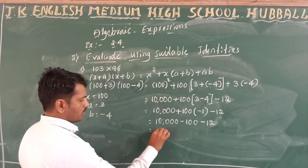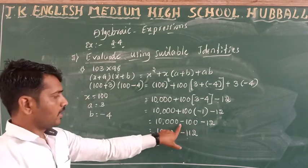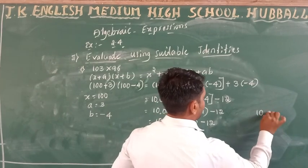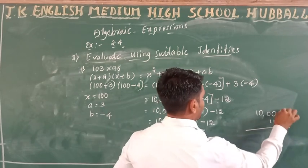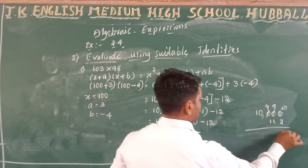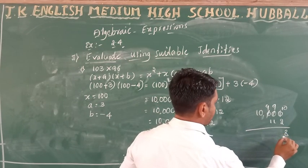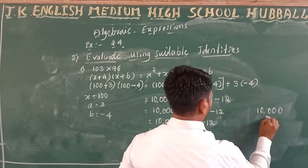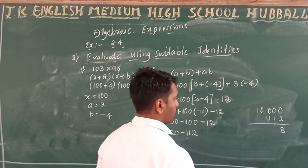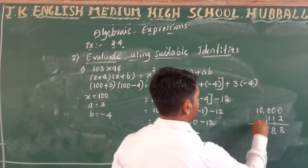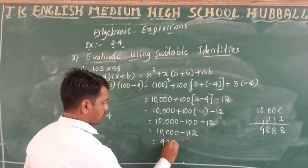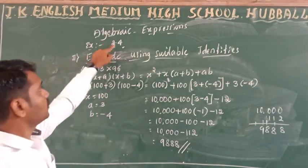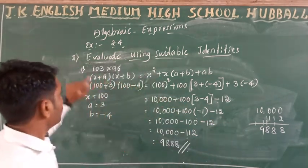So 10000 minus 112 equals 9888. That is your answer. From exercise 2.4 we have solved all the evaluate questions using suitable identities — specifically the identity (x + a)(x + b) = x squared plus x(a + b) plus ab.